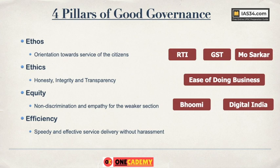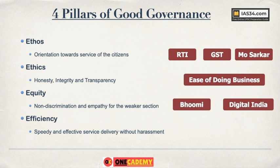You should also have more empathy for the weaker sections, as they are the most vulnerable in society. The fourth pillar of good governance is Efficiency — speedy and effective service delivery without any harassment. Some examples of good governance measures are: RTI (Right to Information), GST implemented to simplify the taxation process, Mo Sarkar scheme in Odisha to make public officials answerable to citizens, steps taken to improve the ease of doing business in India, the Bhoomi scheme in Karnataka which digitized and simplified land rights processes, and Digital India.